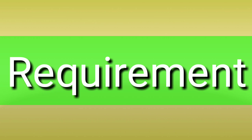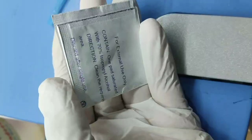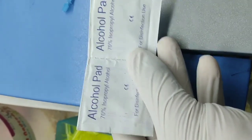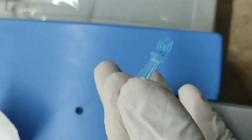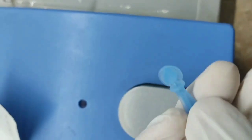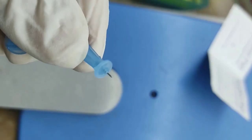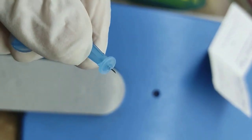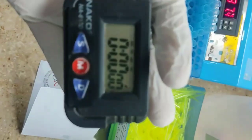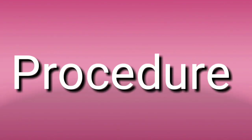Now let's look at the requirements — what we need while performing this test. We need an alcohol pad or alcohol swab, which we will use to clean the specific area. This is the lancet, also called a template, and this is the needle of the lancet through which we will prick the area. We also need filter paper to absorb the blood flow, and a stopwatch.